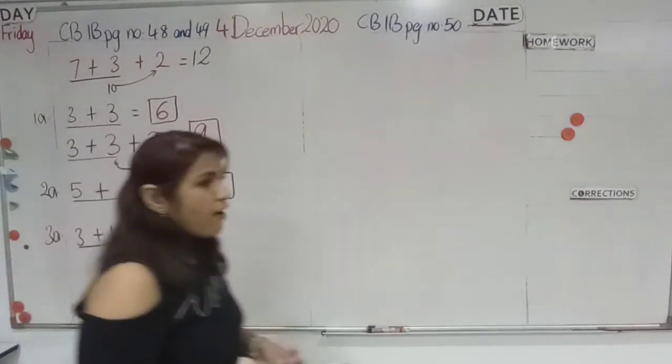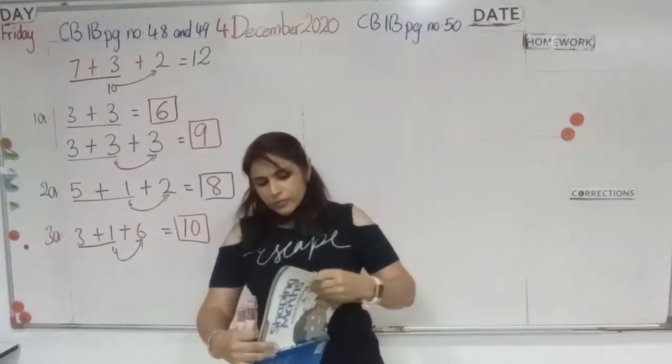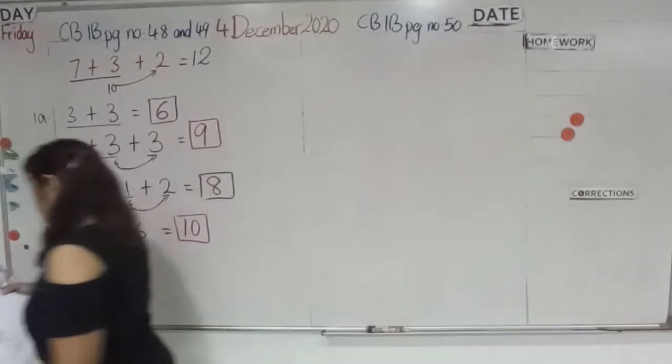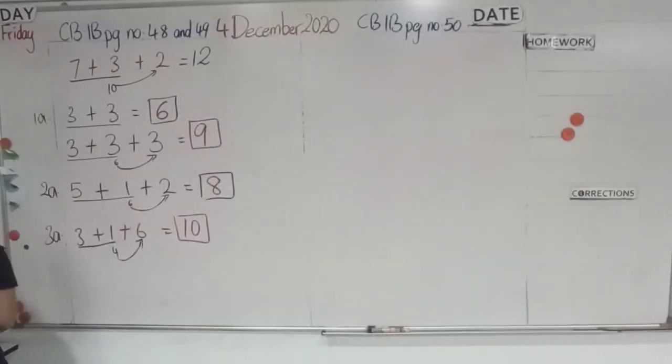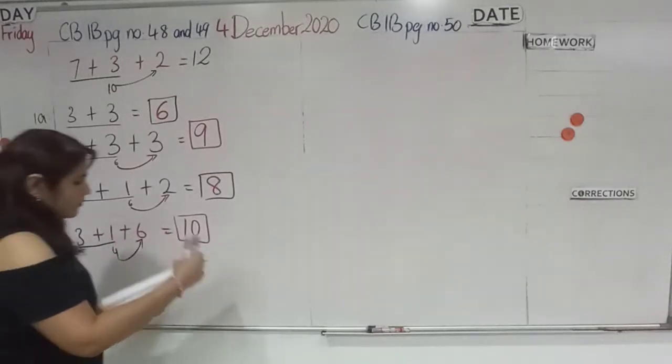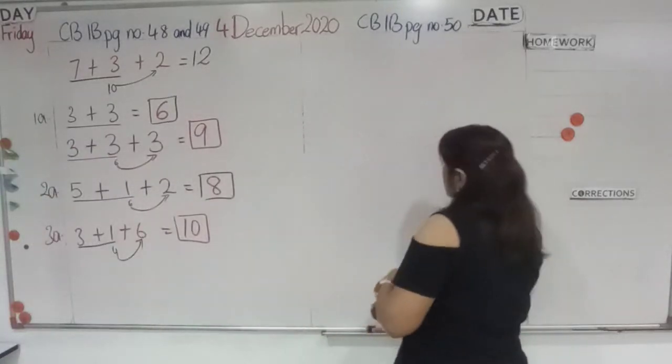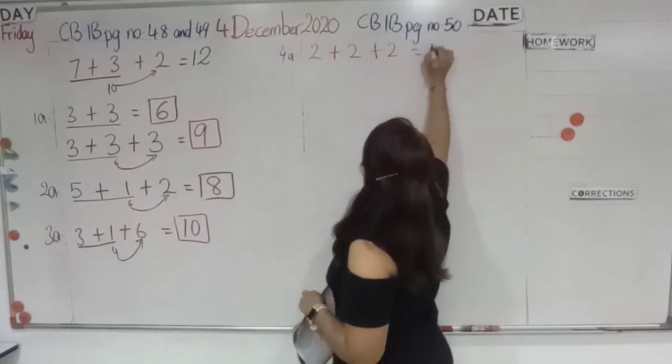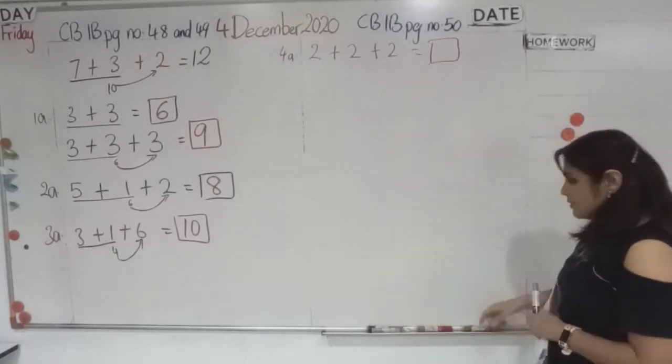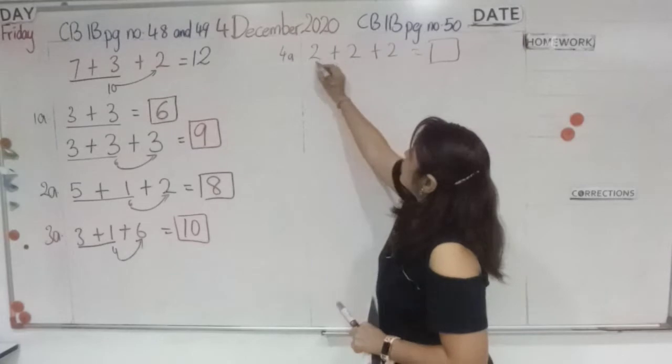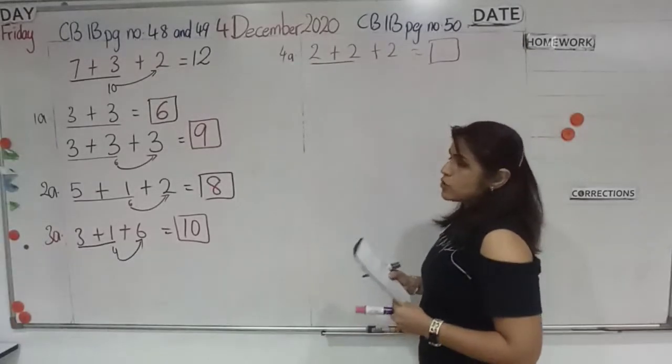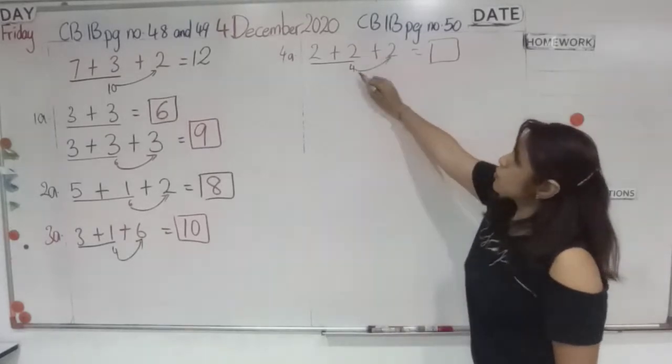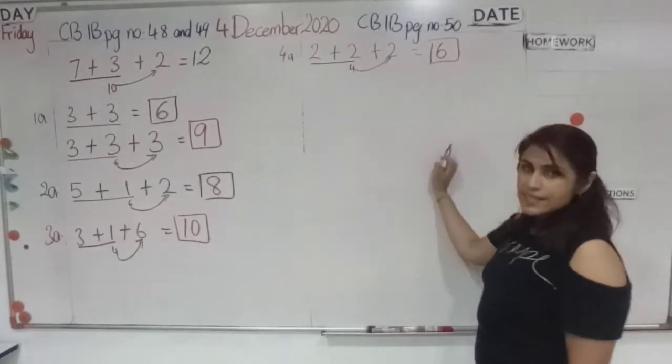Okay, now, go to page number 50, which says, add. There is a number line given to you. 4A, they have 2 plus 2 plus 2. I want you to follow this pattern. Underline the first 2, add them. 2 plus 2 is 4. Draw an arrow pointing to the next number. So, 4 plus 2 is 6.